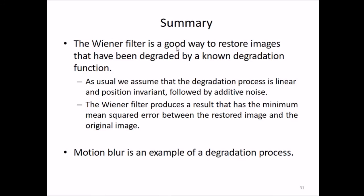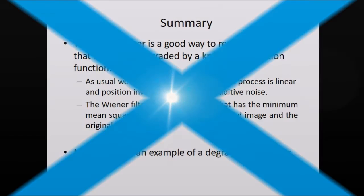The Wiener filter is a good way to restore images that have been degraded by a known degradation function. We assume the degradation process is linear and position invariant, followed by additive noise. The Wiener filter produces a result with the minimum mean squared error between the restored image and the original. Motion blur is also an example of this kind of degradation process. Thank you.